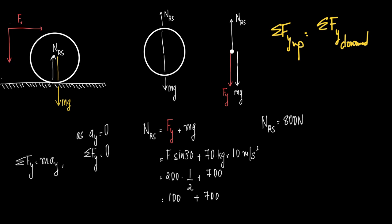We have sum of forces along the y-axis in the upward direction, only one force, which is NRS, is equal to sum of all forces along the y-axis acting in the downward direction. There are only two, so Fy and MG. What is Fy? F sin 30. So, this is F sin 30 plus MG. Mass of the roller is given as 70, so 70 into 10. Fy is F sin 30, F is 200, sin 30 is 1 by 2, so it is 100 plus 700. Therefore, normal reaction on the roller due to the surface is 800 newtons.